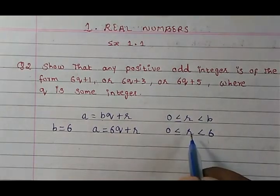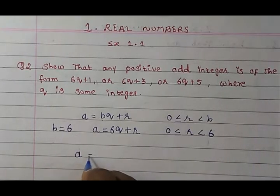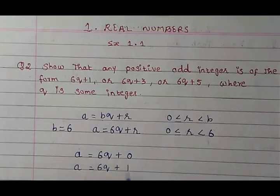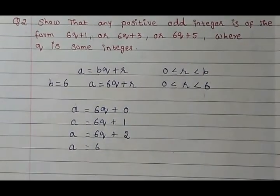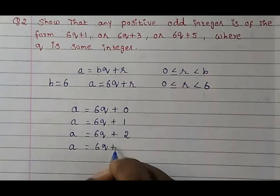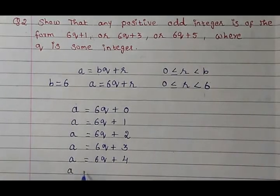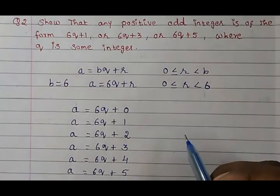That means what are the possibilities of the remainder? It could be 0, 1, 2, 3, 4 or 5 less than 6. So let's put down all the possible remainders that we can have. So a = 6q+0, it could be 1, it could be 2, it could be 3, it could be 4, it could be 5. Now more than this, we can't have it. It has to be less than 6.